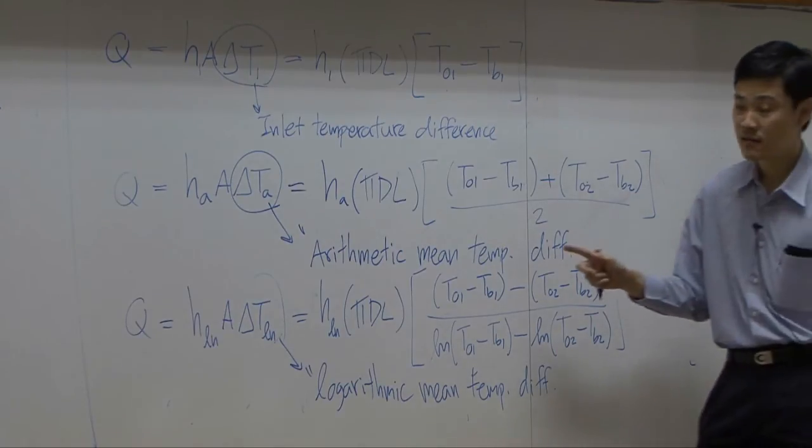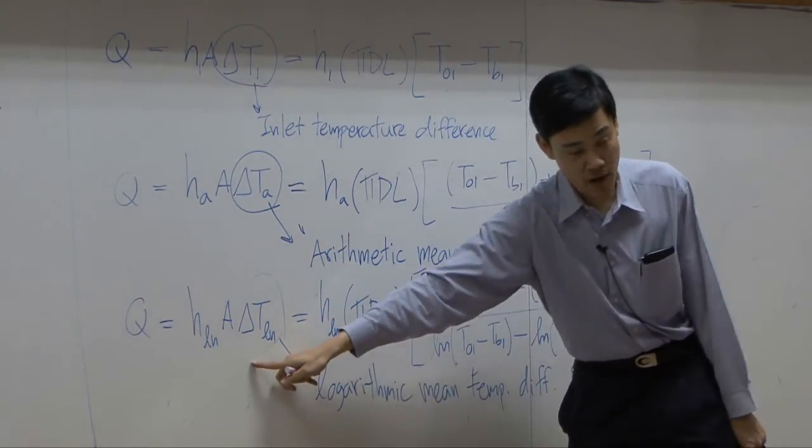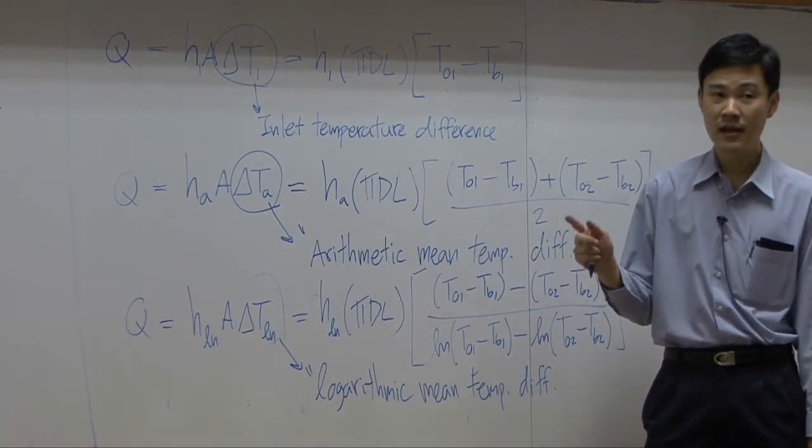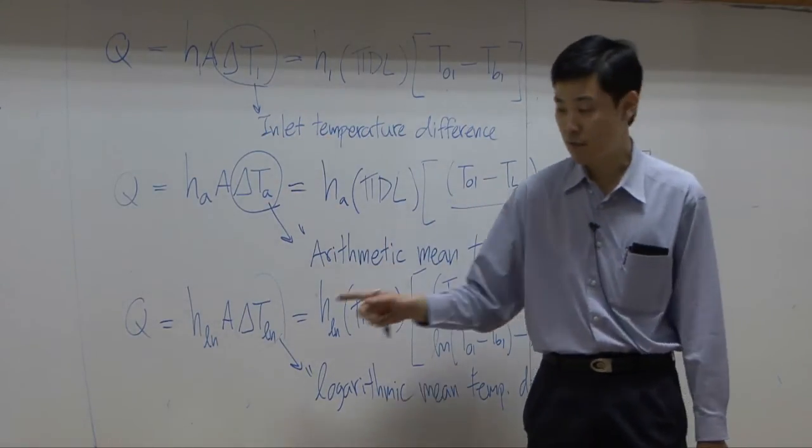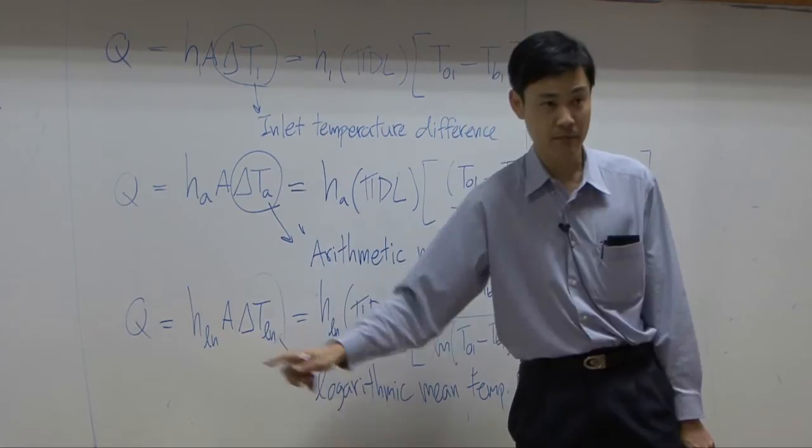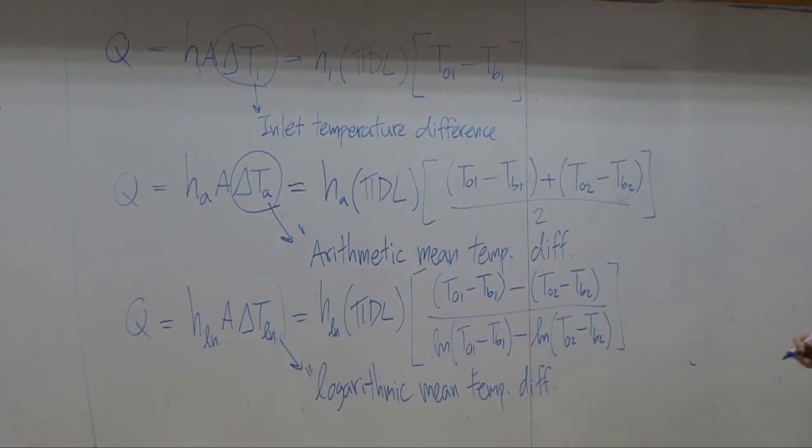But I can tell you that this one is the most popular. So normally, in the handout or in the textbook, heat transfer coefficient mostly would be represented in form of h log mean. Because people have found that according to experimental data, prediction using this logarithmic means would be more accurate comparing to the experimental result.